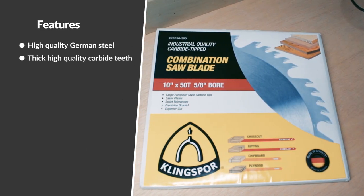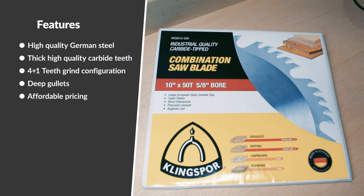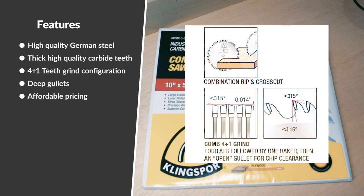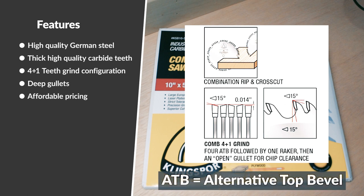Let's go over the features of this blade. It's made out of high quality German steel. This thing is built like a tank. Thick high quality carbide teeth. The carbide teeth are lined up in sets of five and are in a four plus one grind configuration. The first four teeth are ATB grind at a 15 degree angle to score and hog out the meat of the material.